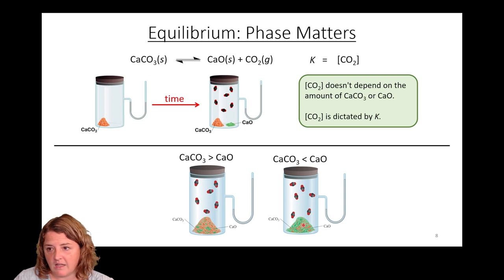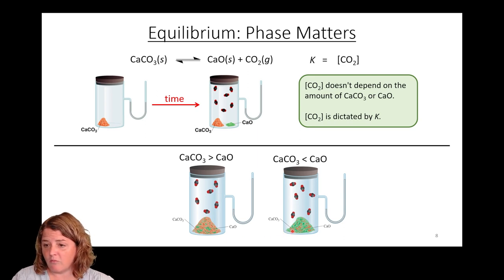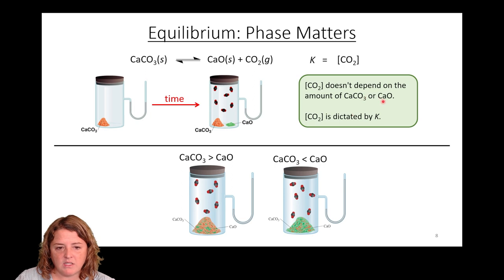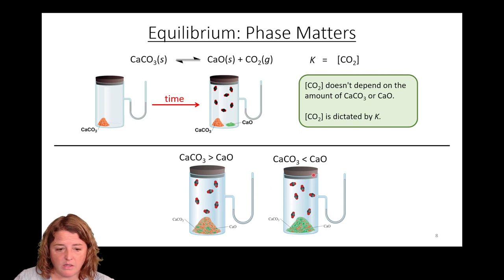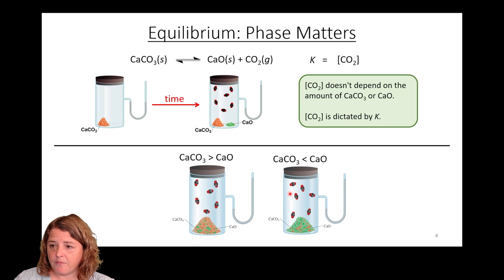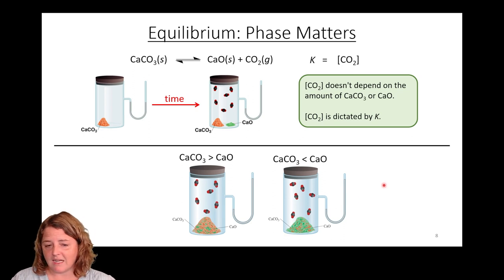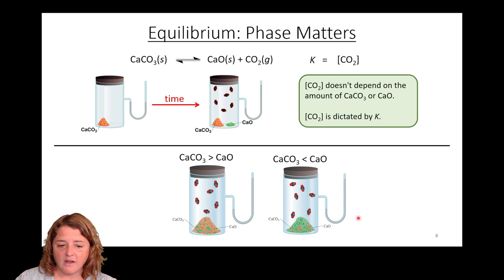Here we start out with more calcium oxide than calcium carbonate. We reach equilibrium and visually we can see we reached equilibrium because we still have some orange and green — we're not in a scenario where we ran out. The amount of calcium carbonate or calcium oxide does not determine the overall amount of CO2 present at equilibrium. This is analogous to equilibrium vapor pressures from Chapter 10: the equilibrium vapor pressure of water is the same whether you had a giant vat of water or a tiny thimble — the amount of the solid or liquid doesn't matter.